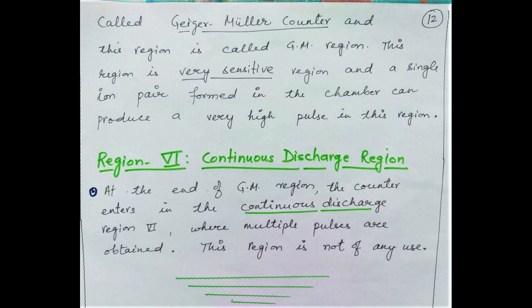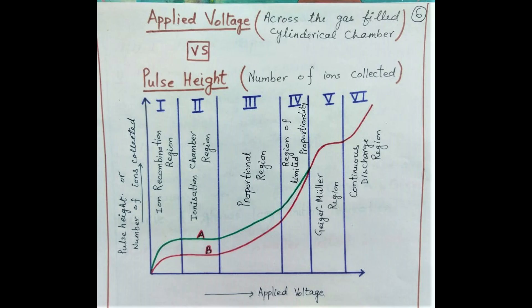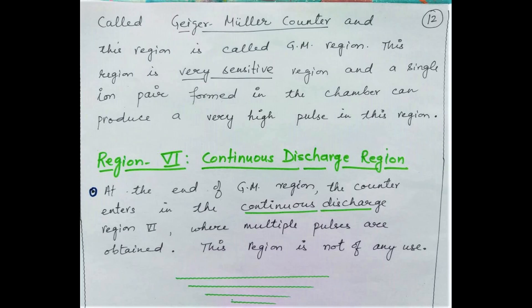Region 6, at the end of the GM region, is called the continuous discharge region. Now the operating voltage is so high that multiple pulses are obtained and it has nothing to do with the incident particle, their types, or how much is the initial ionization. It is not related to the initial ionizing event at all, so this region is also not of any practical use.